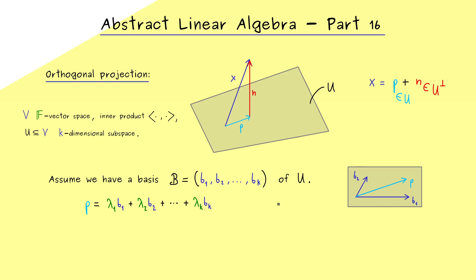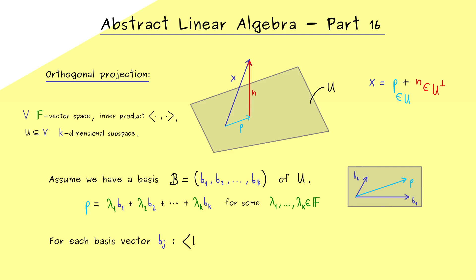What we want to do now is calculate these coefficients such that we get our orthogonal projection. More concretely, we assume that we already have such a decomposition and then figure out what this implies for the coefficients, hoping to get a nice formula for these scalars. The overall idea is that we can use what we already know from the one-dimensional case and apply it for every vector bj. Hence the essential thing we have to do is to calculate an inner product.